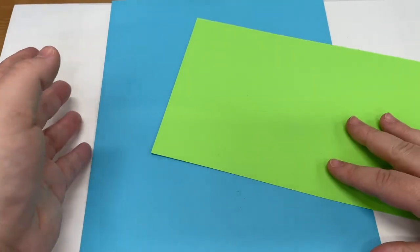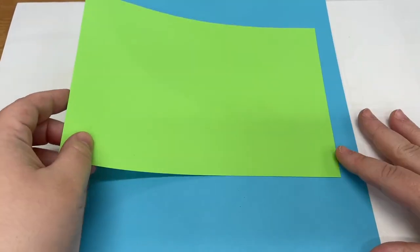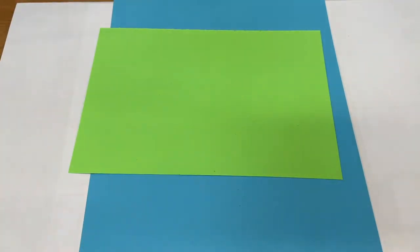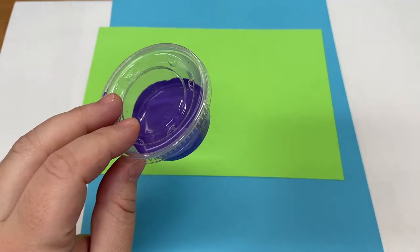For today's craft you're going to have a piece of blue paper, a piece of green paper, you're also going to want scissors, a bottle, and you should also have purple paint.